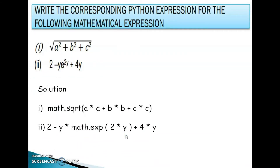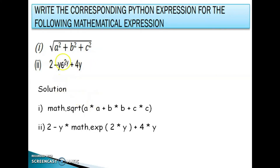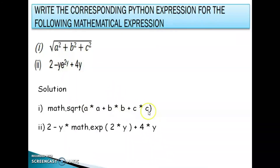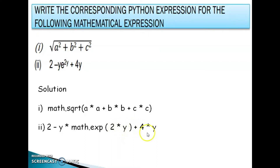Write the corresponding Python expression for the following mathematical expressions. First, square root of a squared plus b squared plus c squared: math.sqrt(a*a + b*b + c*c). Second, 2 minus y times e raised to 2y plus 4y: (2 - y) * math.exp(2*y) + 4*y.